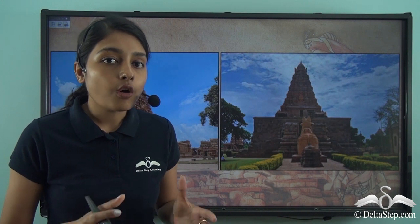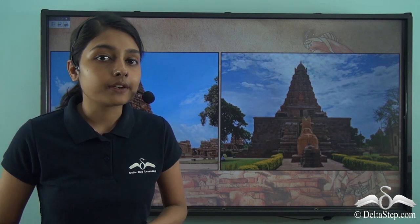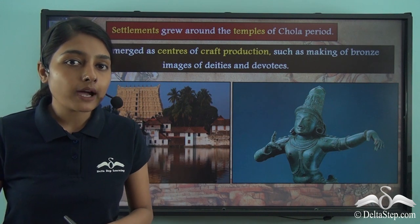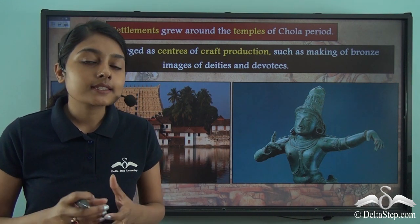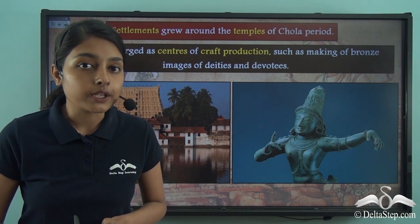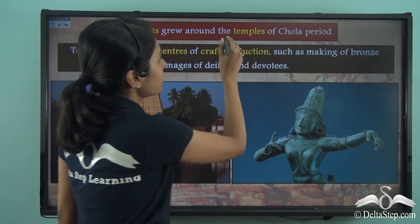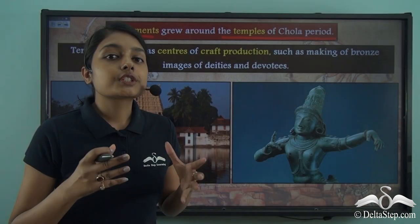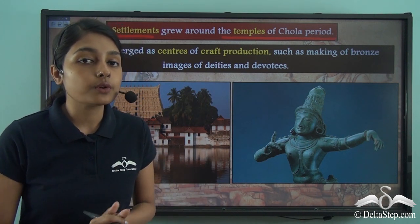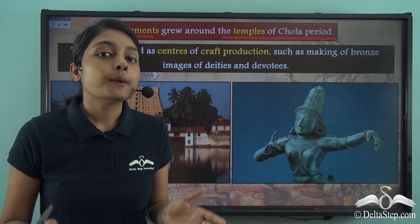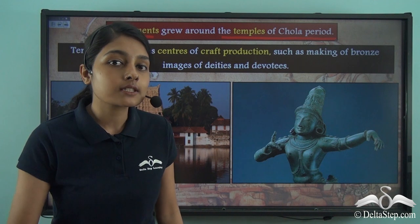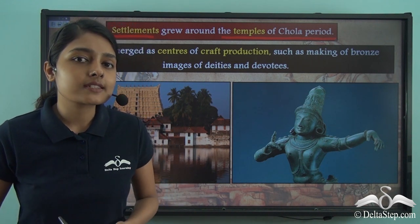Let us begin our discussion on the administration in the Chola Empire. The temples built during the Chola Empire were not just important religious places, because these temples were the focal points around which settlements started growing. Settlements grew around the temples of the Chola period, so the temple became the nuclei of settlements. As more and more people started living around the temples, the temples now started gaining importance beyond the extent of religion.